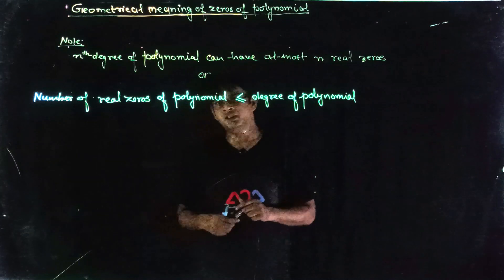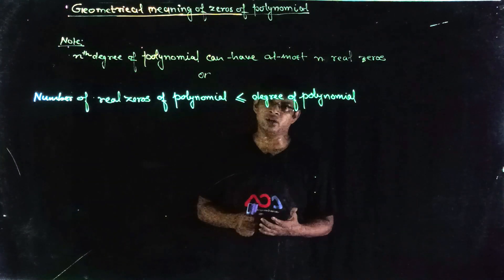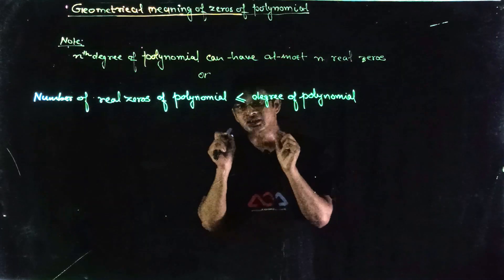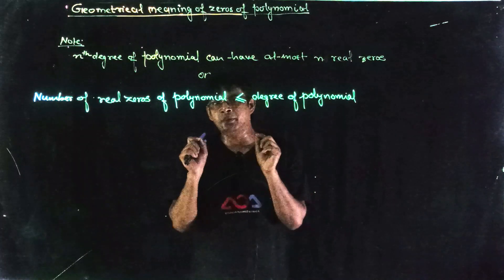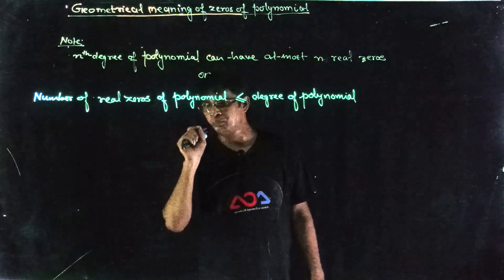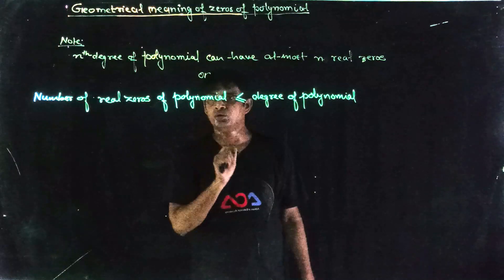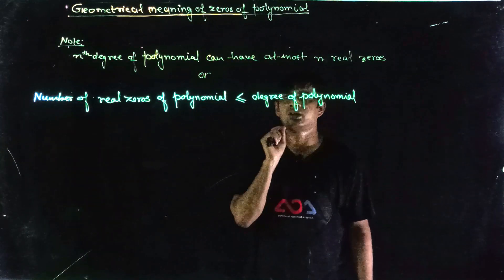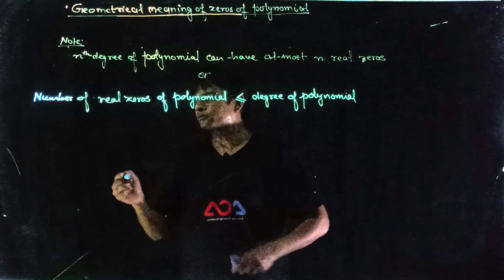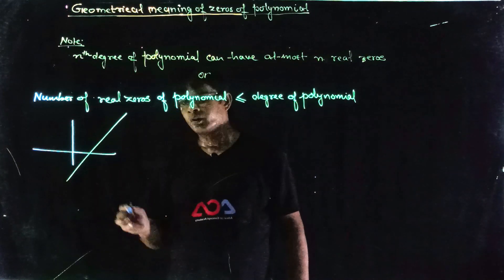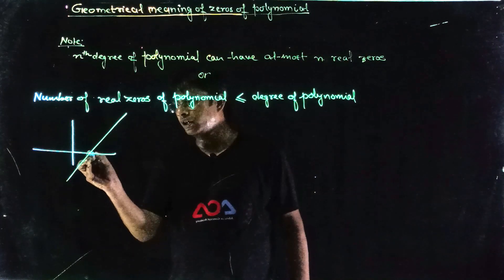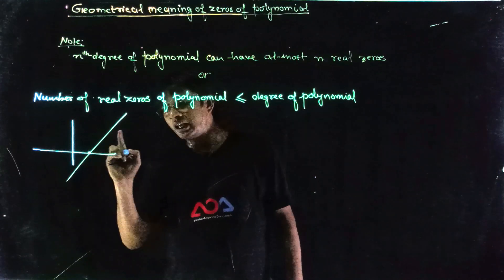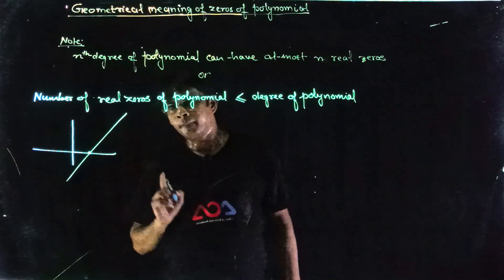Any polynomial that is given to you — when we sketch its graph, the points where that graph cuts the x-axis, the x-values at those points give us the real zeros of that polynomial. For example, this is a straight line; it has cut the x-axis at a single point, so it will have one real zero.